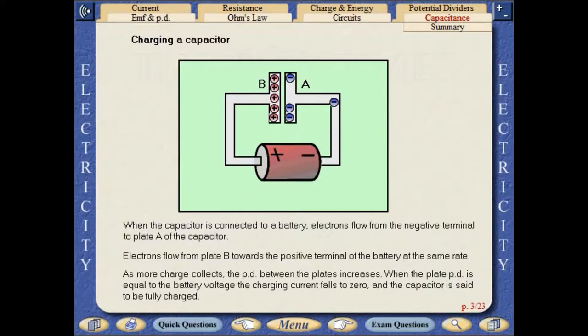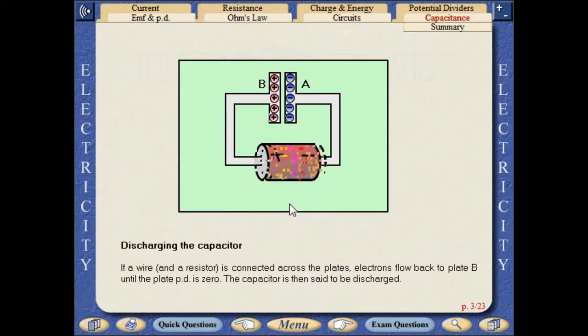As more charge collects, the PD between the plates increases. When the plate PD is equal to the battery voltage, the charging current falls to zero and the capacitor is said to be fully charged.